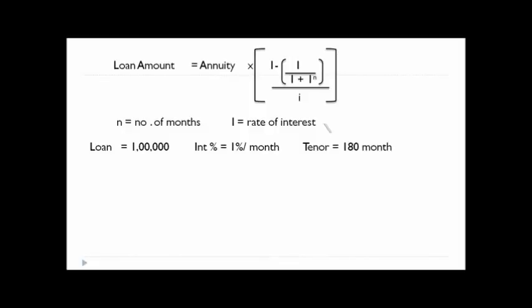Let's say the tenor is 180 months. So what should be the EMI which should be paid every month? Here we know the loan amount is equal to 1 lakh, so we'll write 1 lakh equal to annuity. So I'll call it as EMI multiplied by the formula.